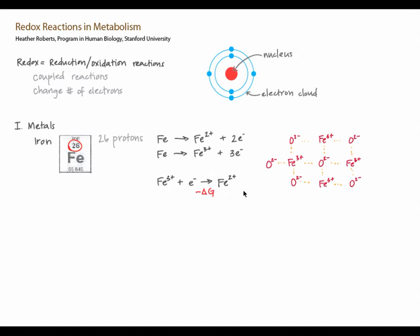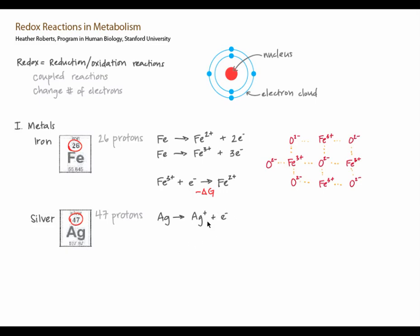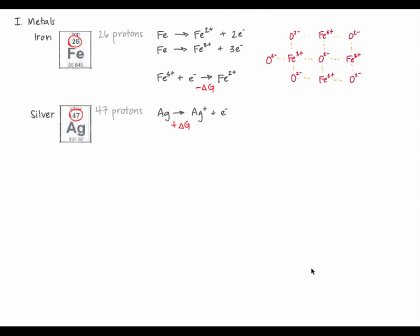Iron 2+ is slightly more stable than iron 3+, so the process of adding an electron to iron 3+ to form iron 2+ has a negative delta G. Now look at silver. Silver has an atomic number of 47, so it has 47 protons. In the presence of oxygen and water, silver can lose one electron to form a silver ion, silver+. Silver+ is slightly less stable than neutral silver, so this process has a positive delta G. Imagine two ions, iron 2+ and silver+, interacting such that one electron is transferred from iron 2+, forming iron 3+, to silver+, forming neutral silver.